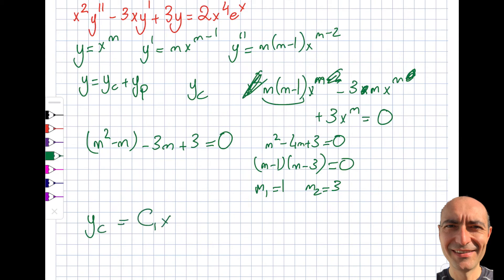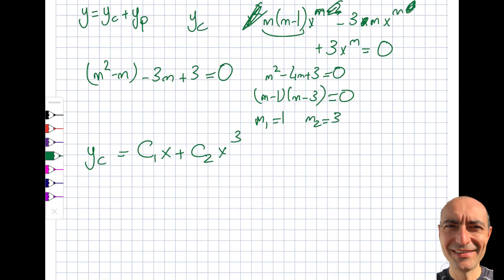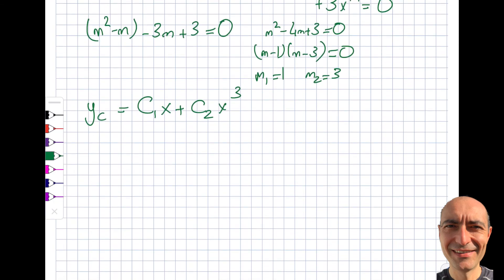So yc = c₁x + c₂x³. Now comes the more difficult part — finding yp. Let's write the equation one more time and divide everything by x², because I want to leave the leading coefficient as 1. You get y'' minus (3/x)y' plus (3/x²)y equal to...